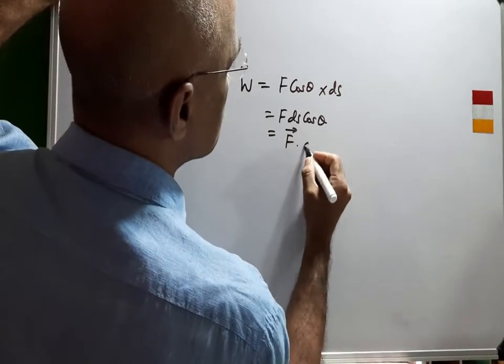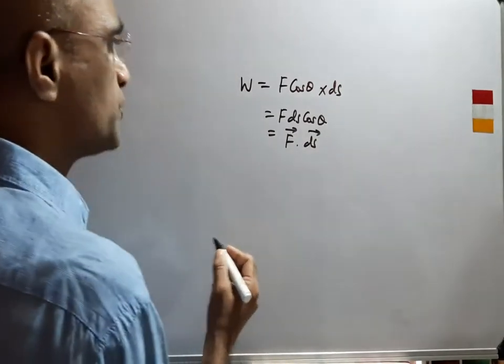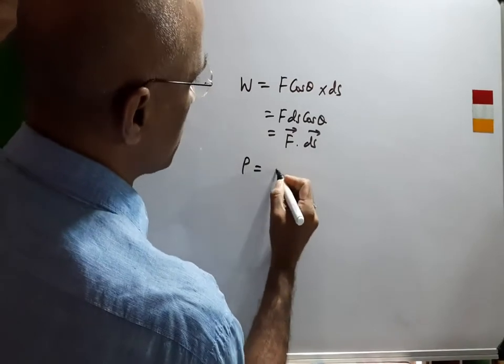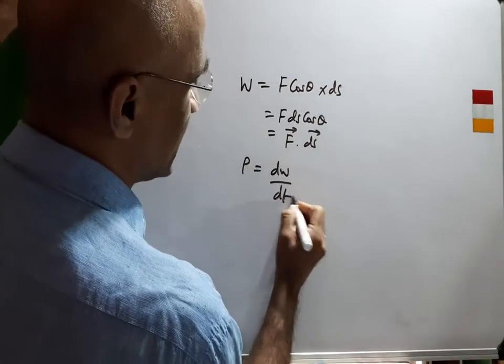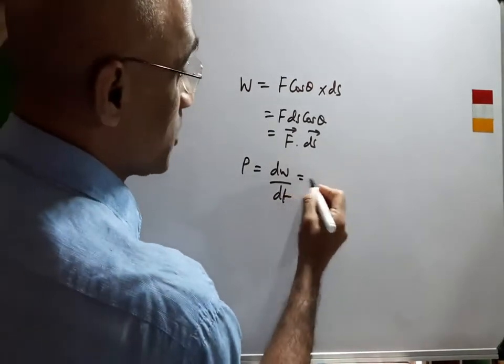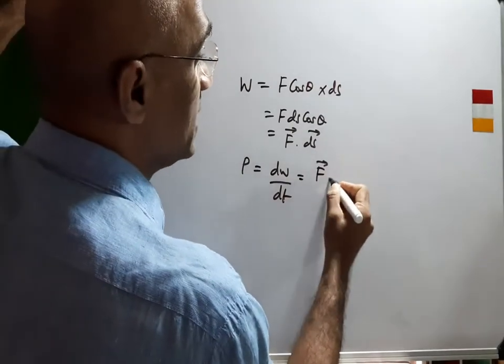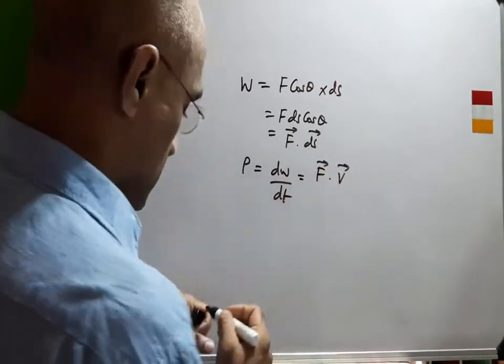Also we have that the equation of power is nothing but the rate of doing work, dW by dt. Now this is also the product of force into velocity.